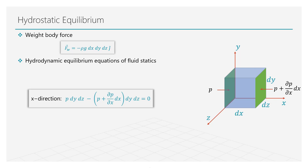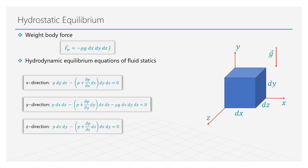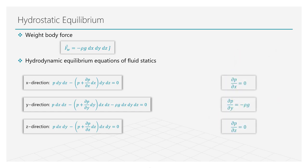Repeating the same steps for the other two directions, we complete the equilibrium equations. The equations can be then simplified in this final form that tells us that the pressure varies only in the direction of the gravity vector.